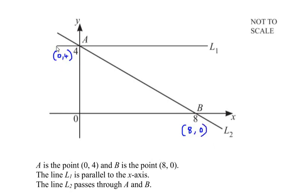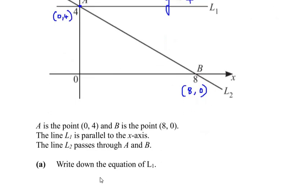To find the equation of line L1, it is given that it is parallel to the x-axis. It passes through the point y=4, so we can write the equation of line L1 as y=4, because this is the line which passes only through the point y=4.